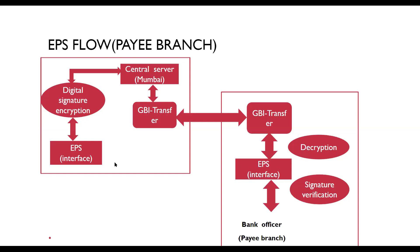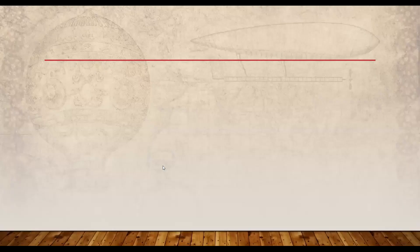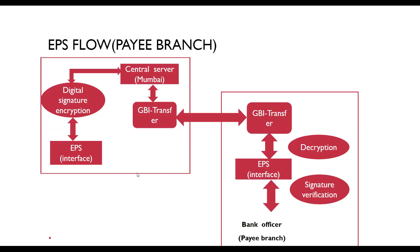This will increase the confidentiality, integrity, and overall security of the transaction. To conclude the payee branch flow: the EPS officer sends the credit request, which is encrypted and digitally signed by the bank's officer. The signed and encrypted request is forwarded to the payee bank, which decrypts the credit request and verifies the digital signature. If the signature is verified successfully, the transaction is entered into the database. If the digital signature is not verified, information about the failure of the credit request is sent to the EPS officer.